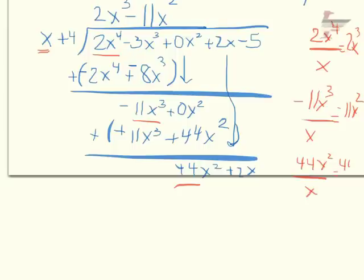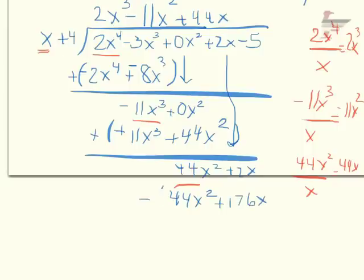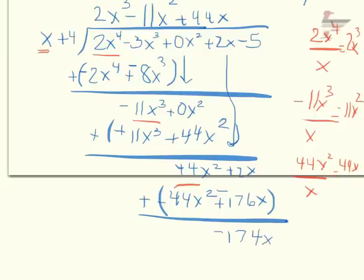My new first term is 44x squared divided by x, which is 44x, so that goes up top as plus 44x. I multiply: 44x times x is 44x squared, and 44x times 4 is 176x. Then I subtract — change the signs — and 44 minus 44 cancels out, leaving 2 minus 176, which is negative 174x.